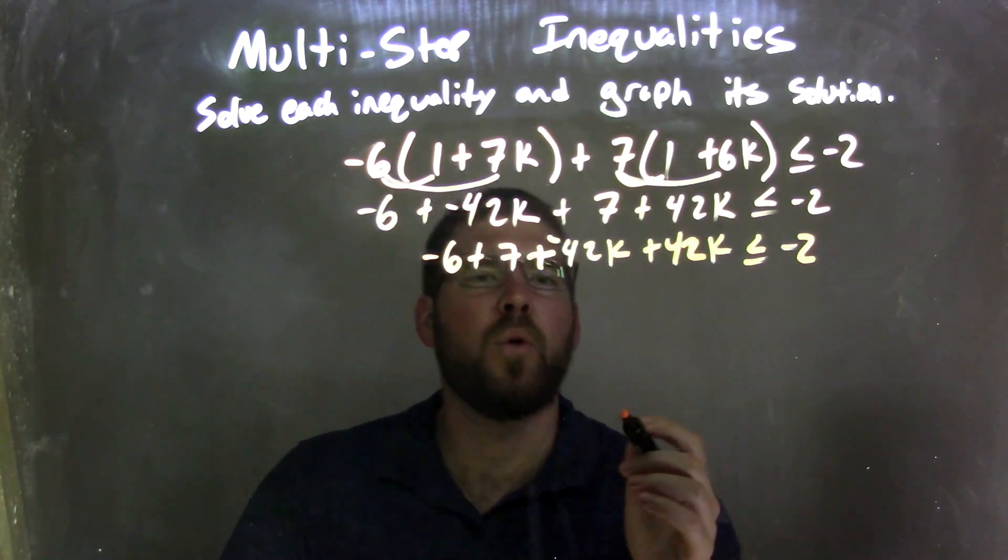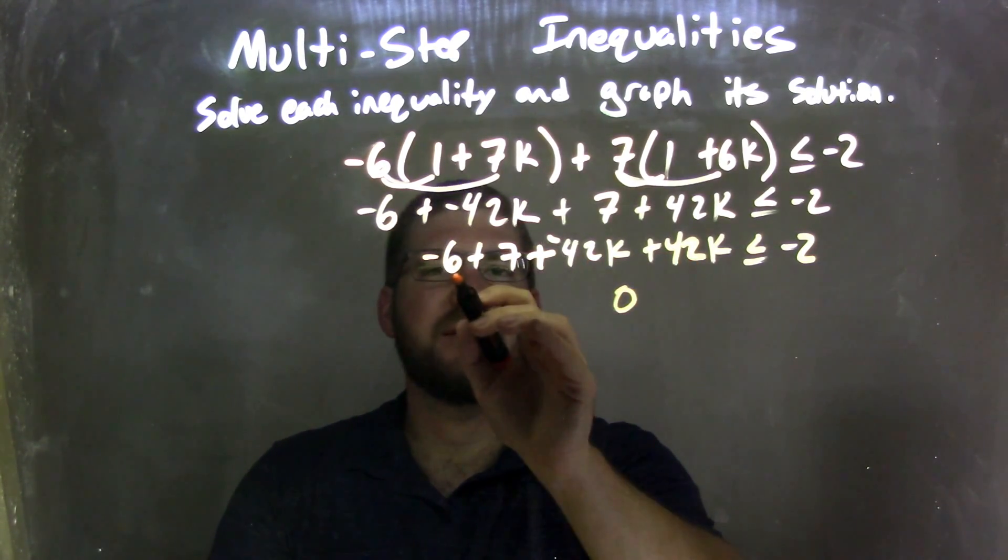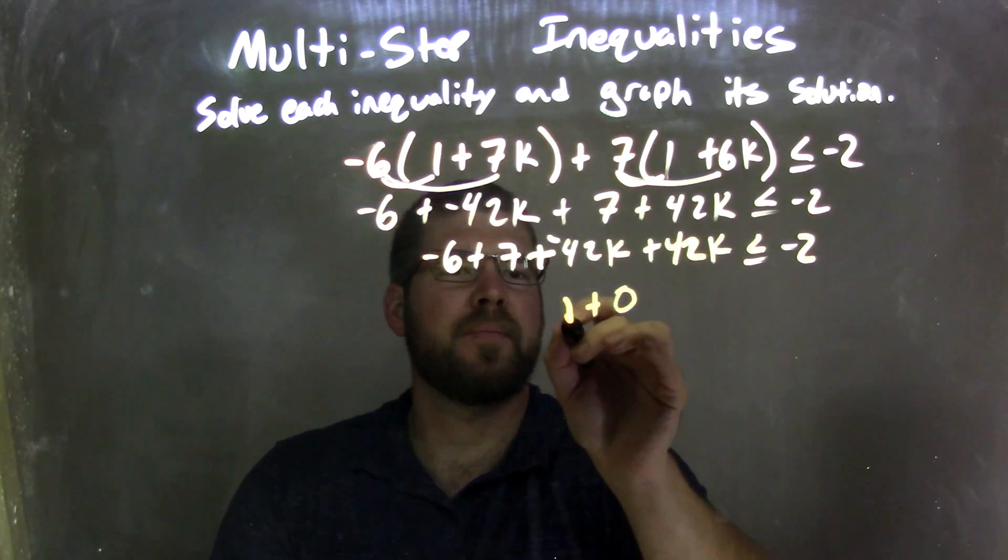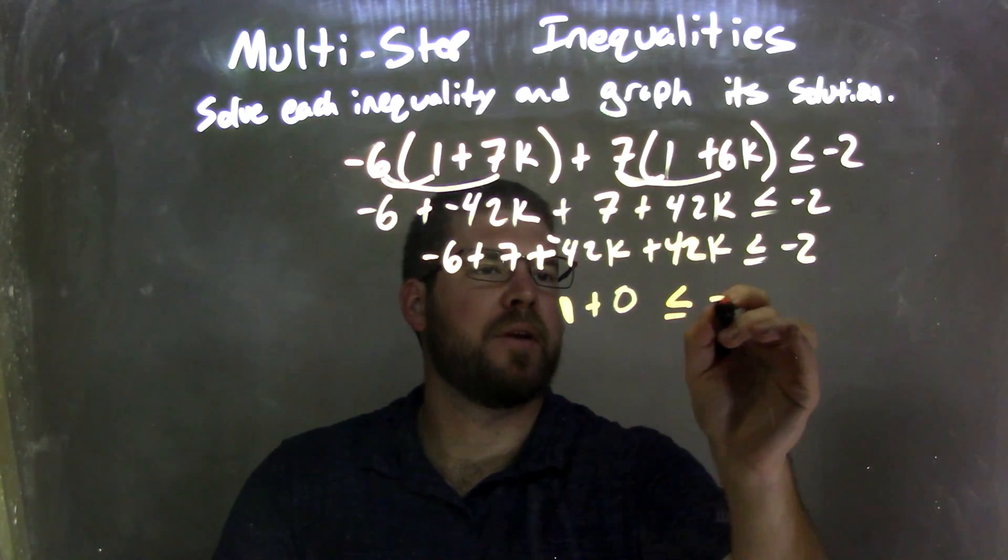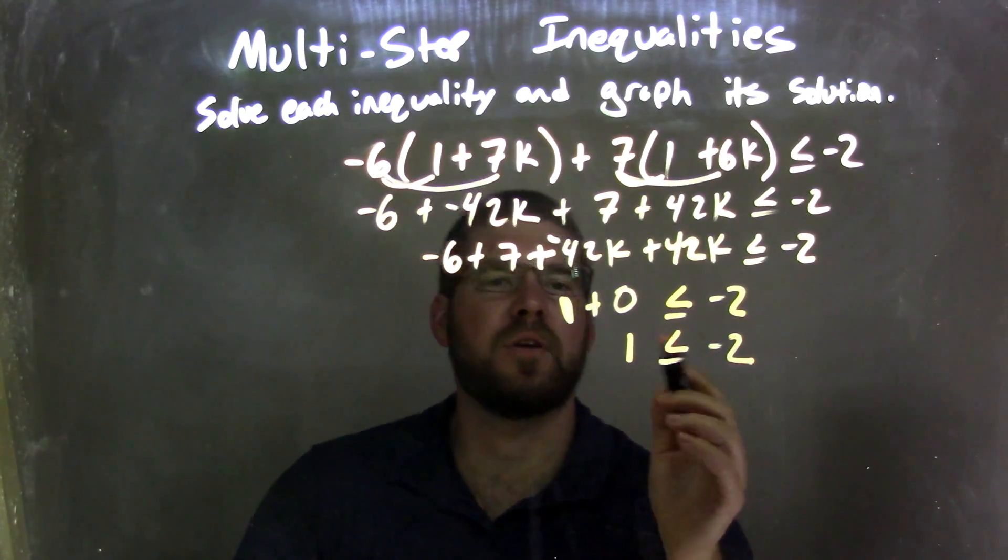Well, negative 42k plus 42k is just 0, and negative 6 plus 7 is positive 1, and that's less than or equal to negative 2. So 1 is less than or equal to negative 2, because 1 plus 0 is just 1.